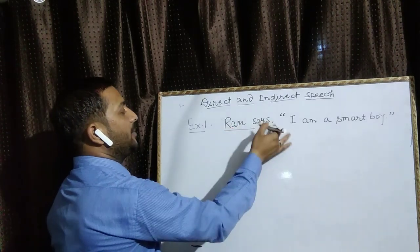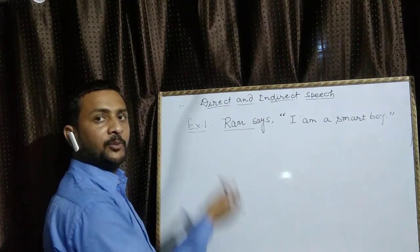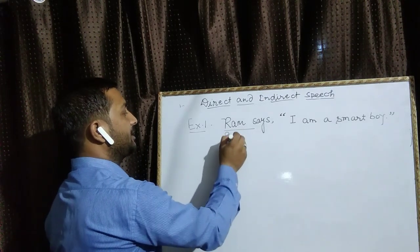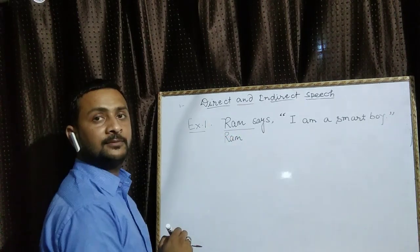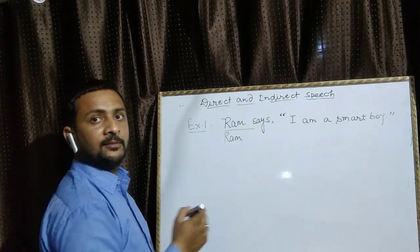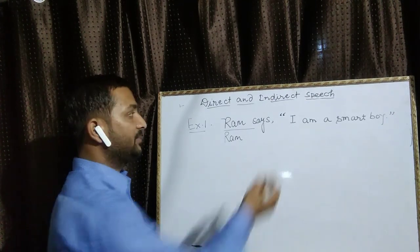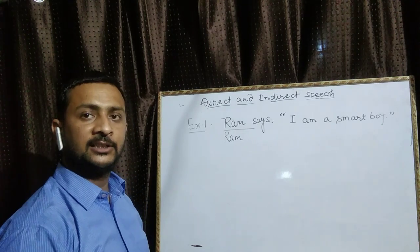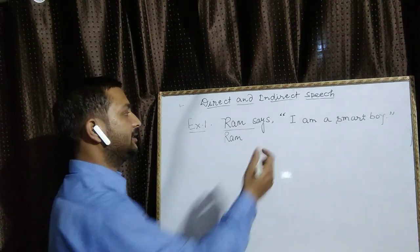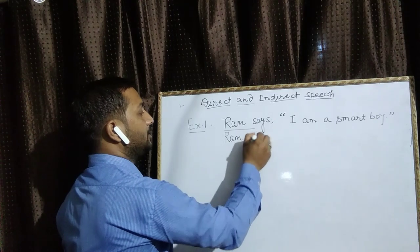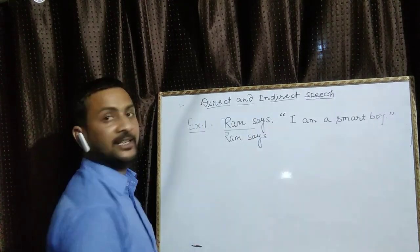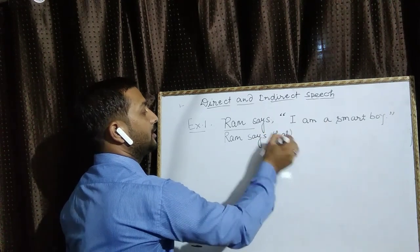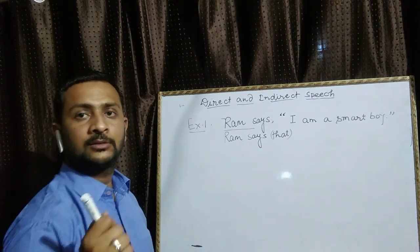Comma से पहला part reporting verb होता है। Reporting verb की side में हम subject को change नहीं करते हैं, तो subject राम है — राम की जगह राम लिखते हैं। Says में — जब verb के बाद 'to' नहीं लगा होता तो verb को same रखते हैं — comma हटाओ, that लगाओ।